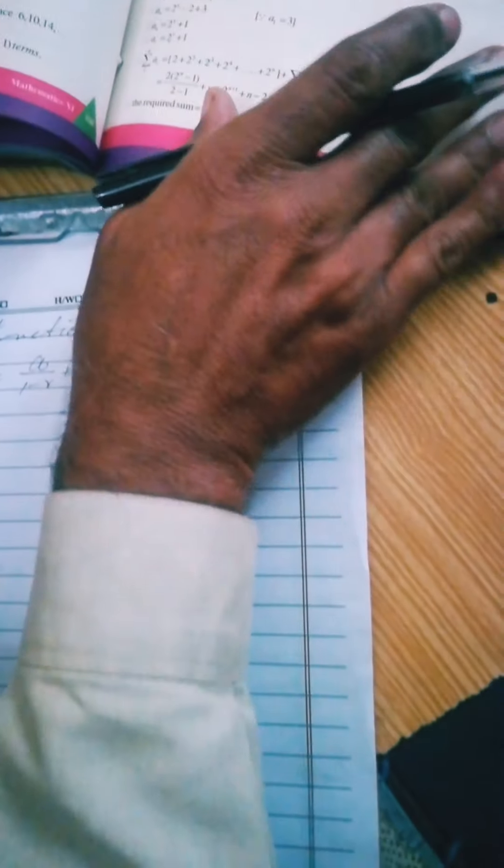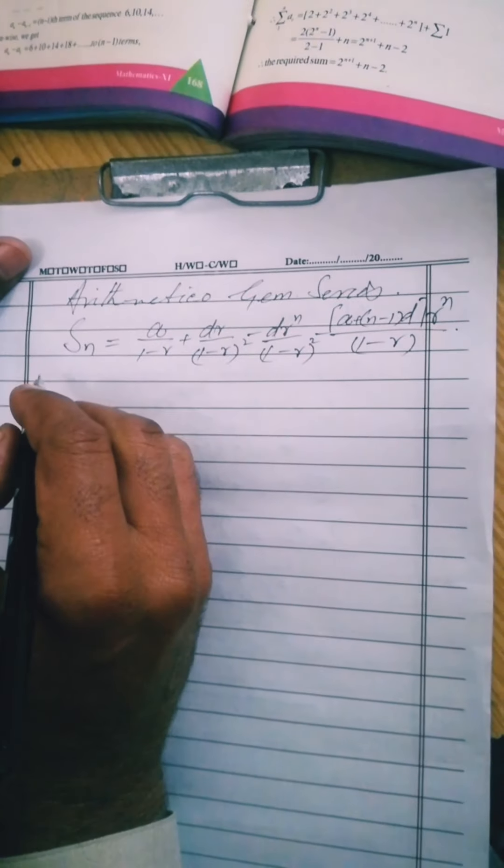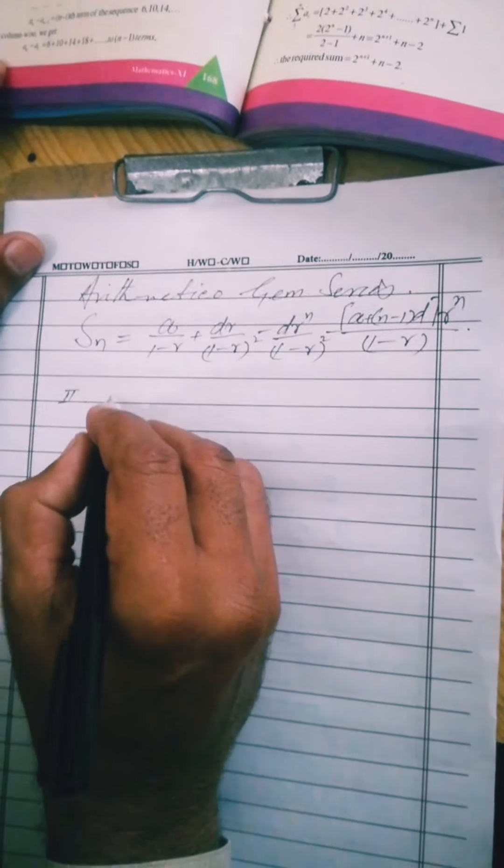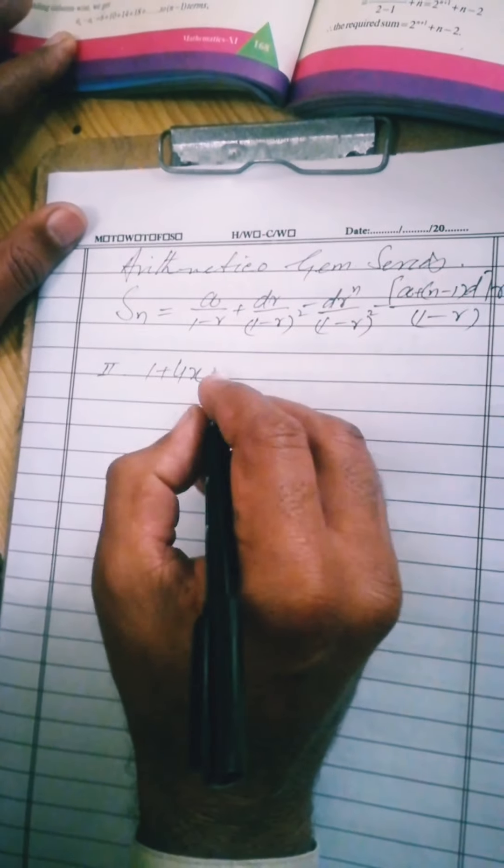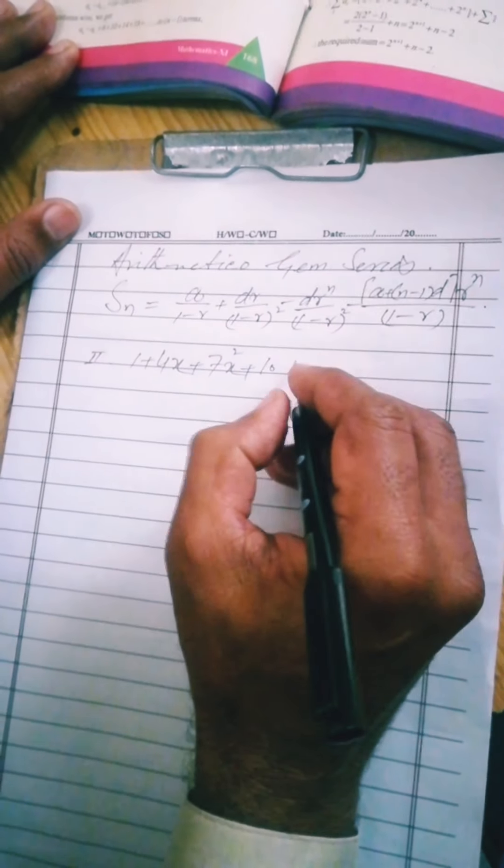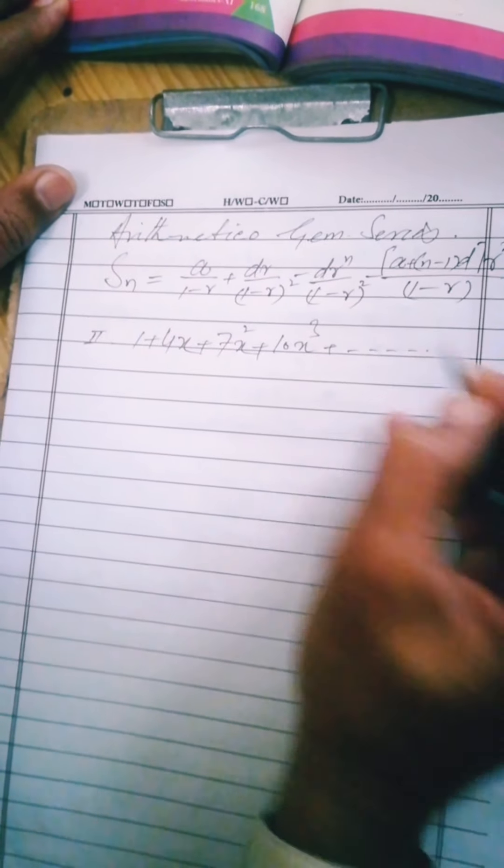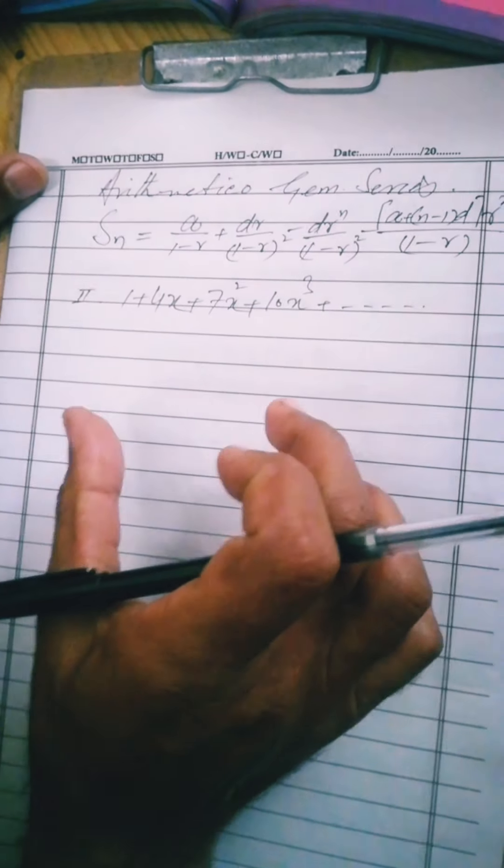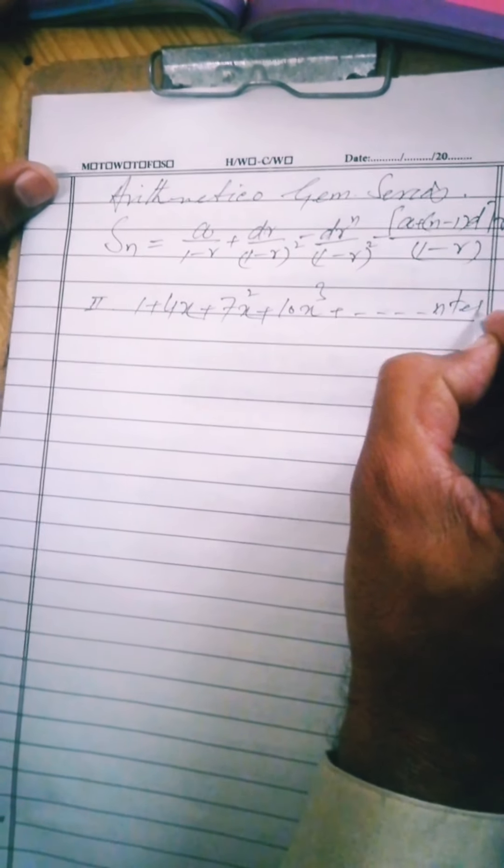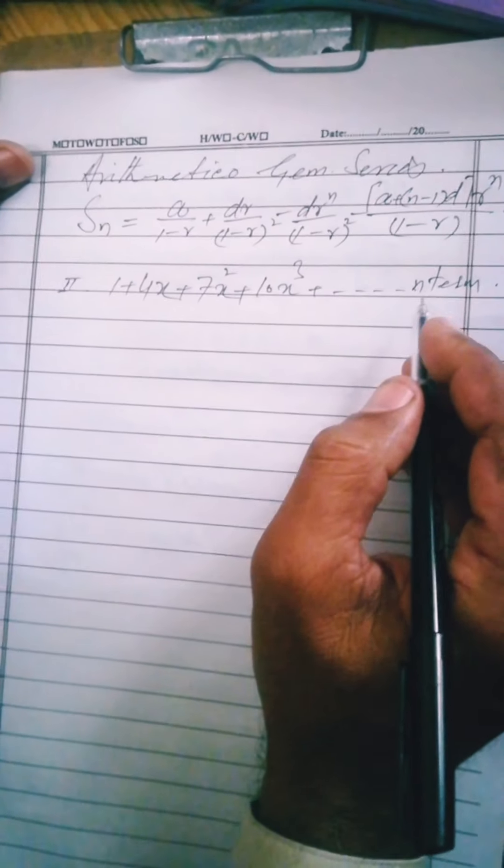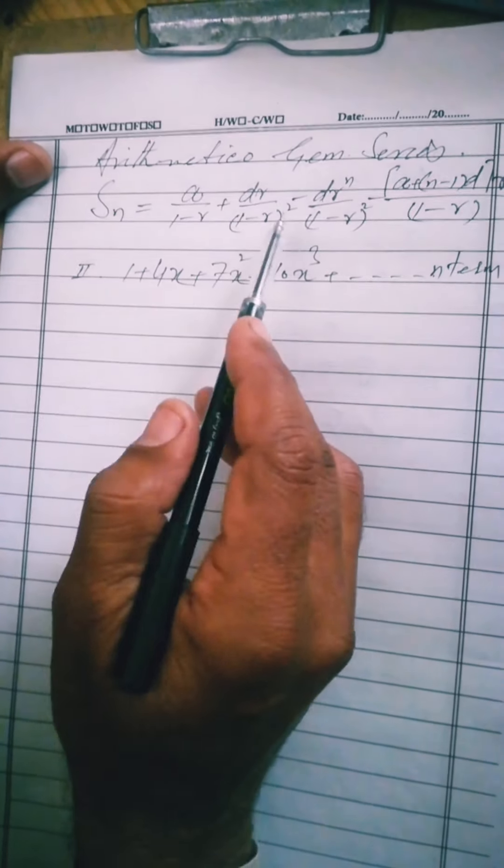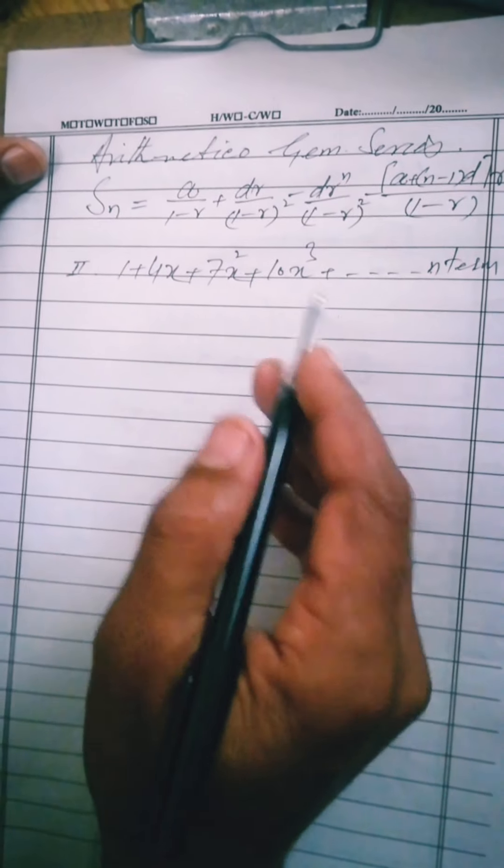In question 1 suppose we take part second. 1 plus 4x plus 7x square plus 10x cube plus and so on. Sum the series, find the sum of this series nth term. It is not up to infinity, up to n term. We have to find the sum up to n term. The method is the same, but first we need to clarify what a is, what d is, and what r is in this.